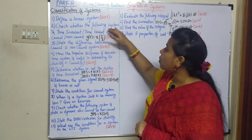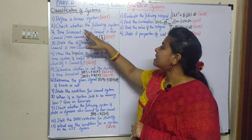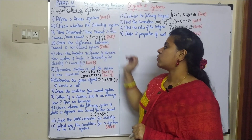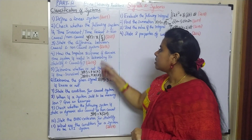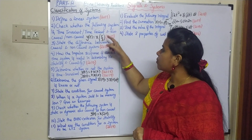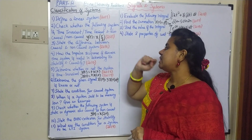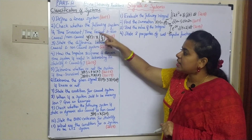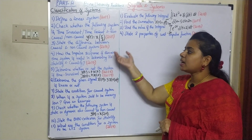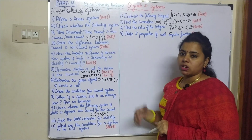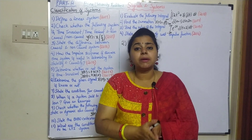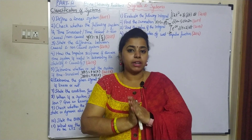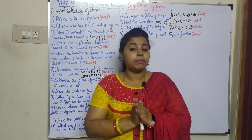Second question: check whether the following system is time-invariant or time-variant, and also causal or non-causal. y(t) = x(t) divided by 3. Now we can find whether the signal is time-variant or time-invariant, causal or non-causal. To check if a system is time-variant or time-invariant, how do we do it?